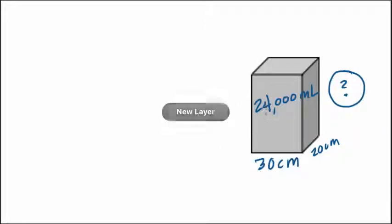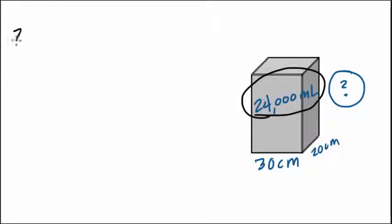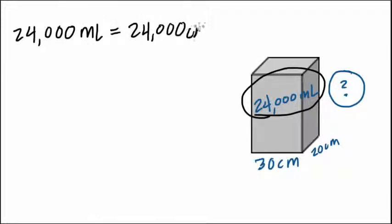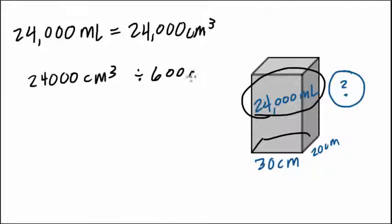And so in order to do that, we can simply rename 24,000 milliliters. What is 24,000 milliliters equal to? It's equal to 24,000 centimeters cubed. And now I can take my 24,000 centimeters cubed and I can divide it by what I have—my base. Area is length times width. That is my base, that's what's down there, which is three times two, or in this case six and two zeros, 600 centimeters squared.